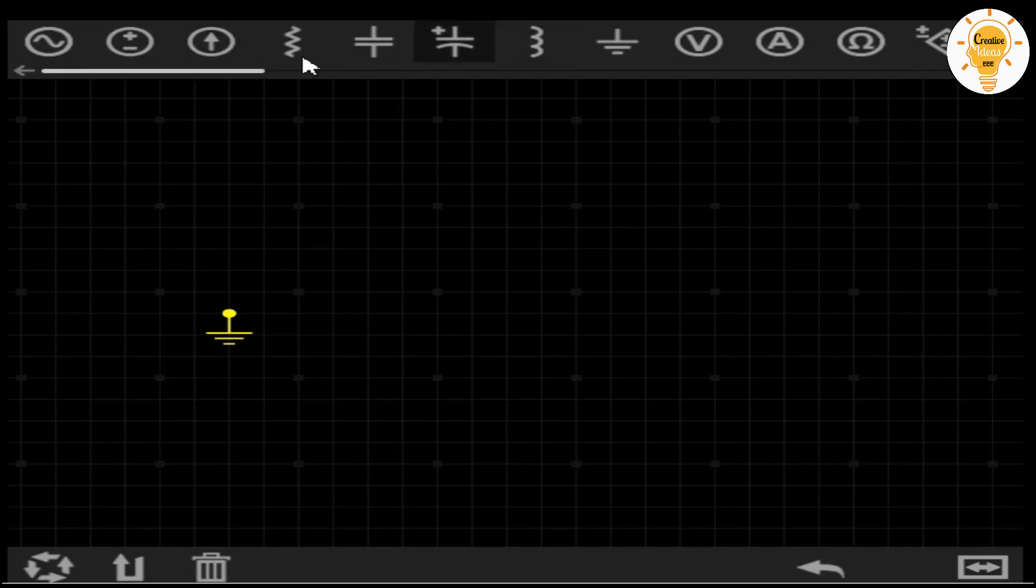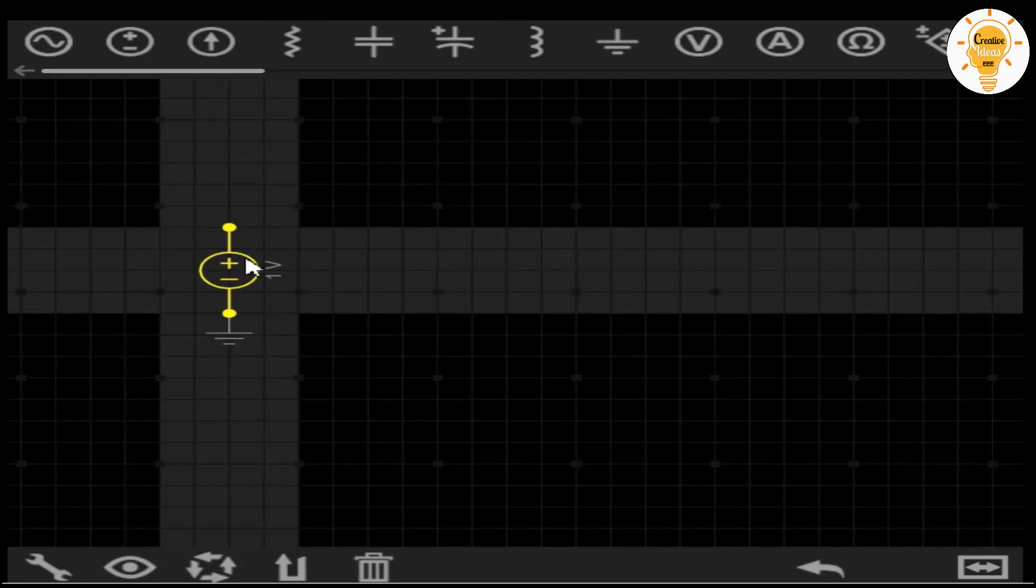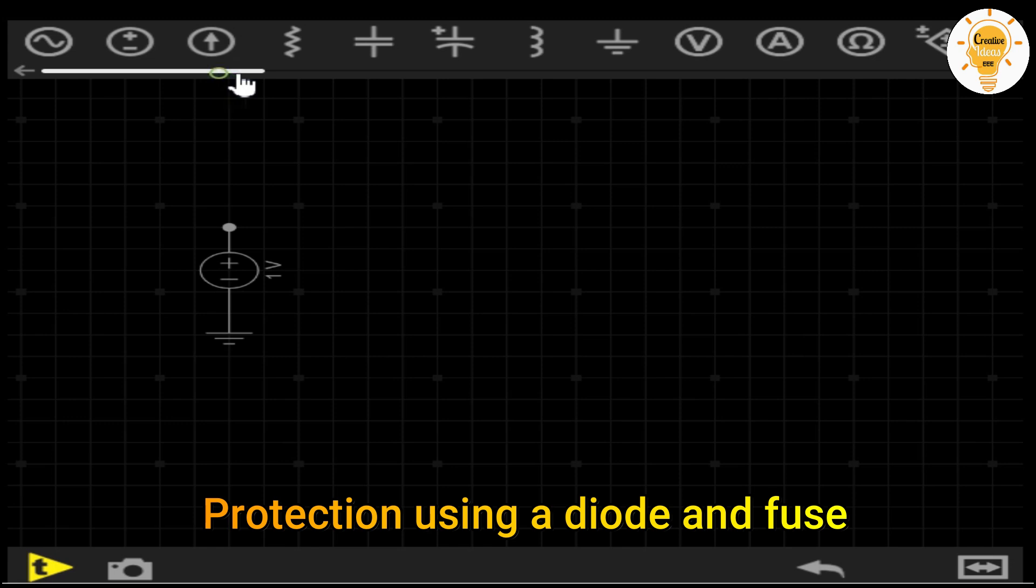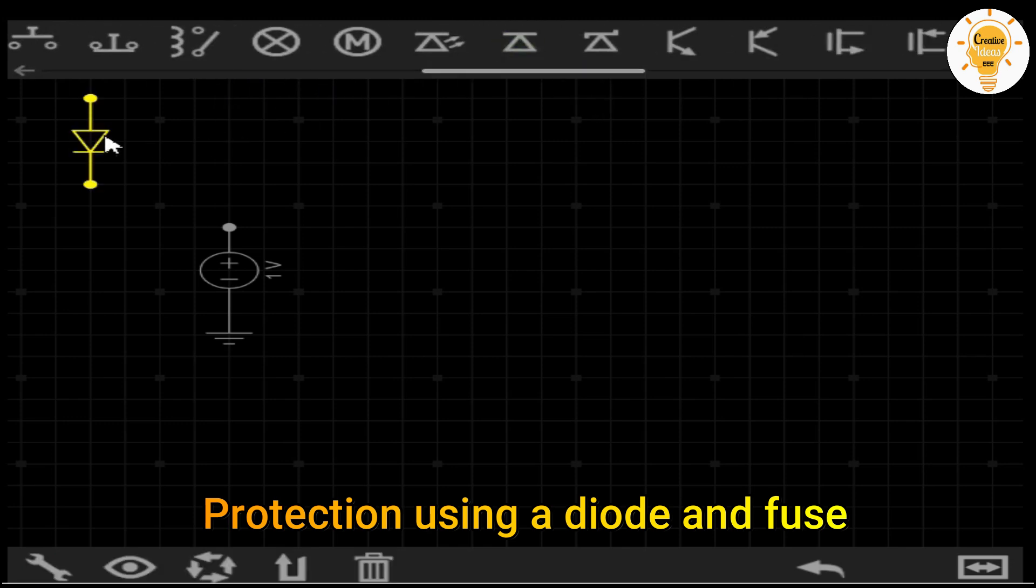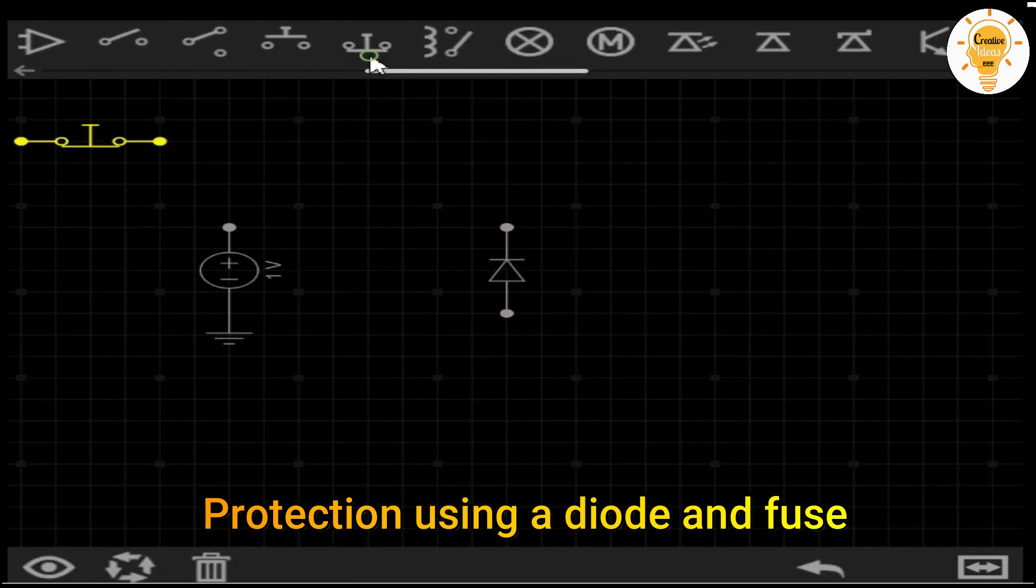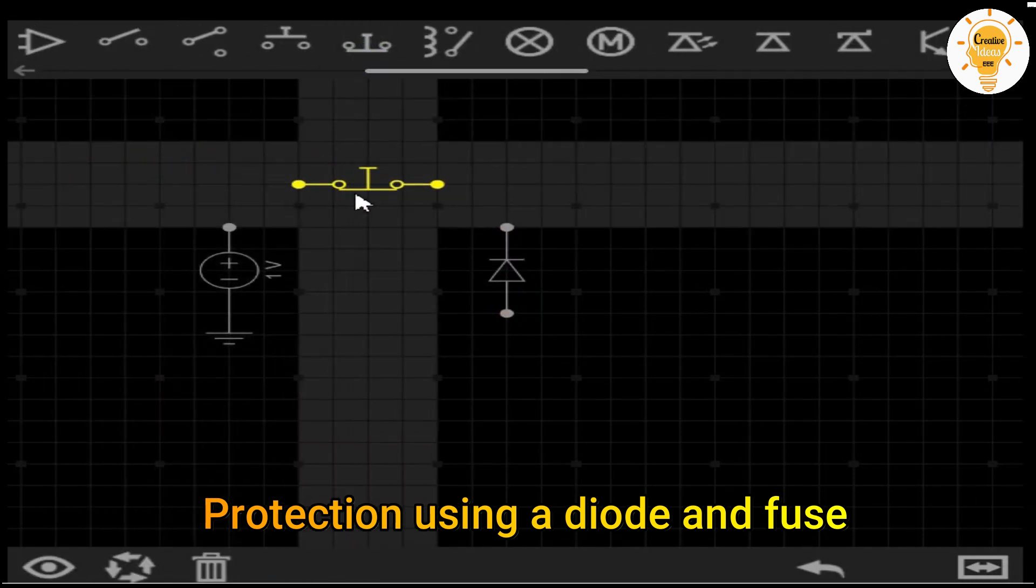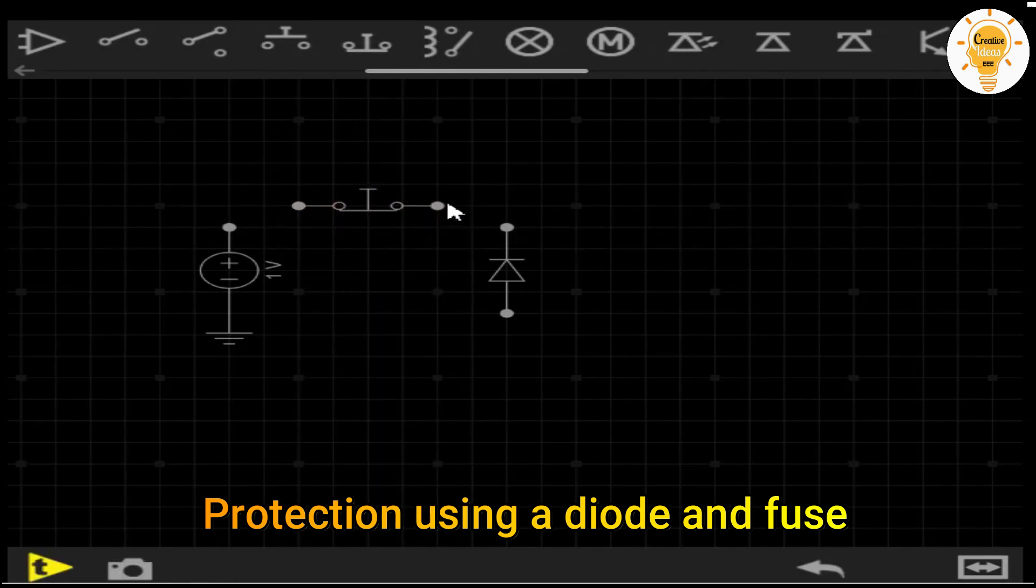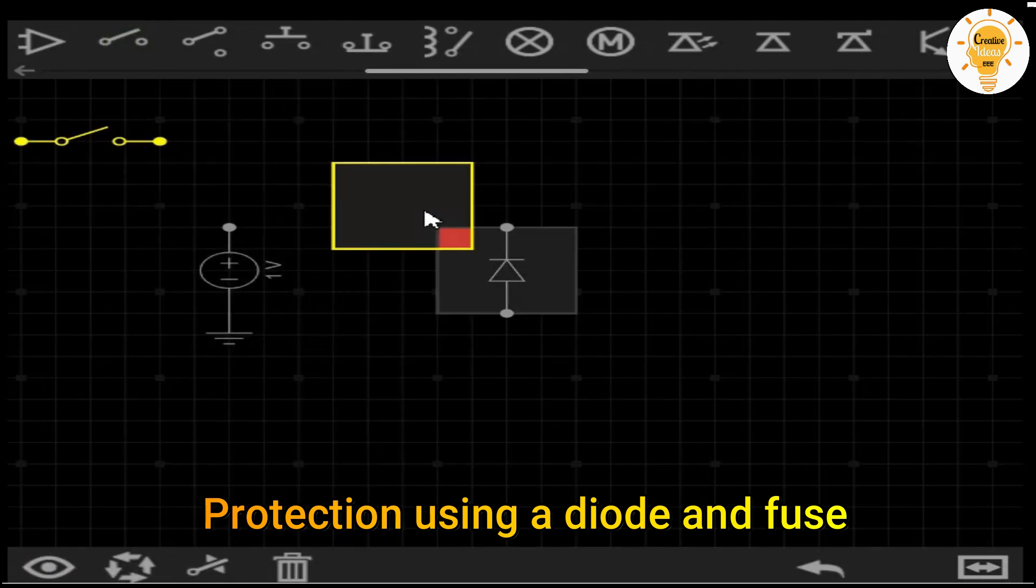Protection using a diode and fuse: In this simulation, fuse component is not available. Instead of fuse here, I used a switch. This type of reverse polarity protection is based on connecting a fuse between our circuit and the load and then protecting it with a diode in parallel with the source.